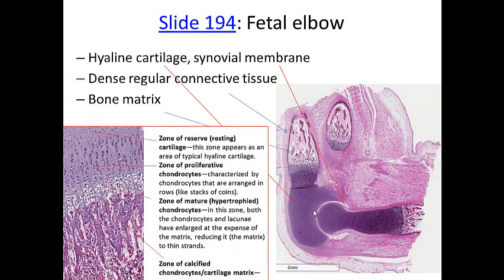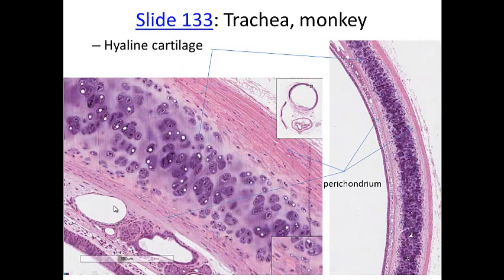In terms of cartilage changing to bone at the growth plate, when going from a cartilage model to a bone model you have an area of reserve cartilage, then proliferation where cells line up, then hypertrophy with increased size and number, and then calcification. When the matrix calcifies, nutrients can no longer diffuse through it — nutrients can diffuse through cartilage but not through bone because of calcification — and this kills the cells. The osteoclast then moves in and eats that up, and it is replaced by bone.